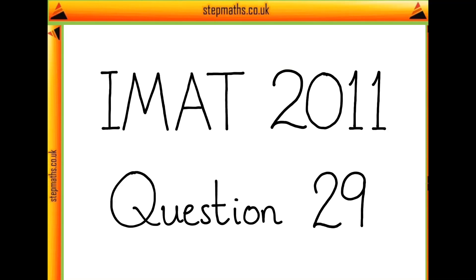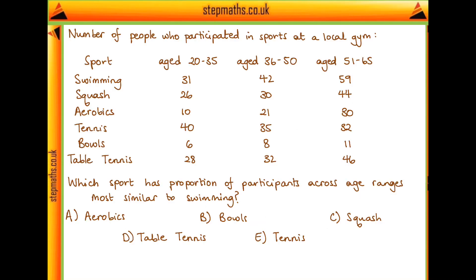I'm going to go through question 29 on IMAT 2011. We're given a table for the number of people who participated in different sports at a local gym, and we want to know which sport has the proportion of participants across age ranges most similar to that of swimming.